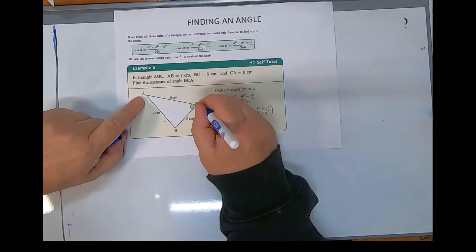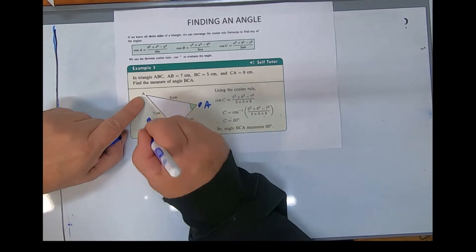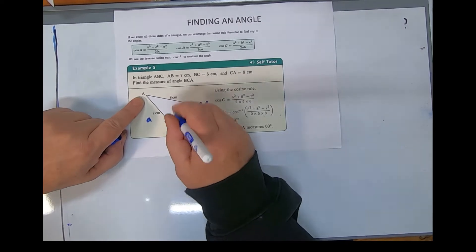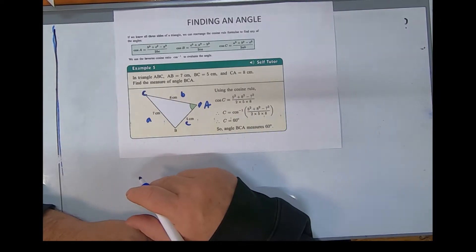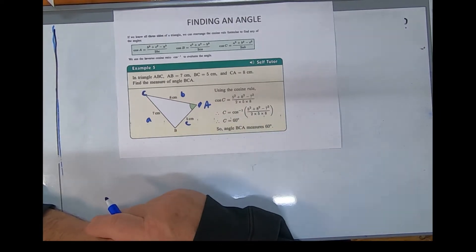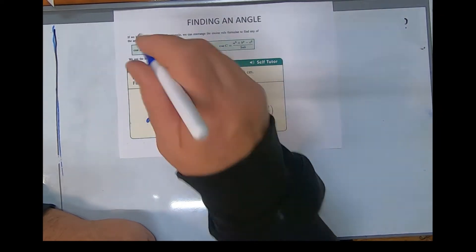I'd like you to have, first of all, capital A, little a, capital B, little b, capital C, little c. I can't open your textbooks and do that for you. So now here's the rule. I'm only going to use the first one.